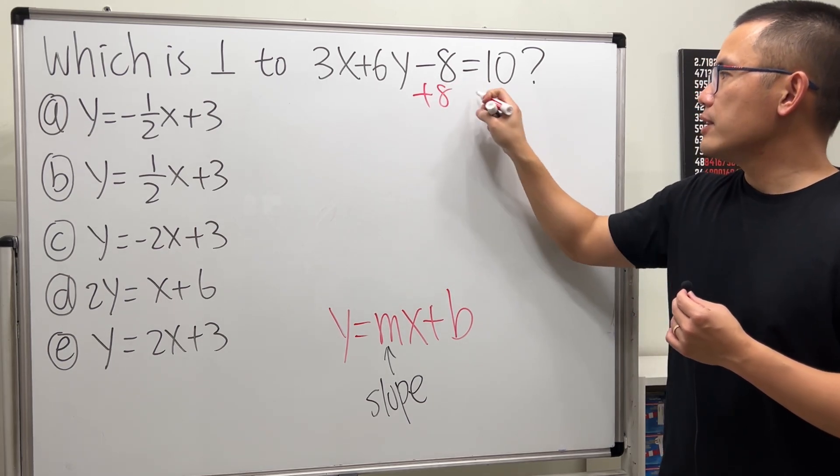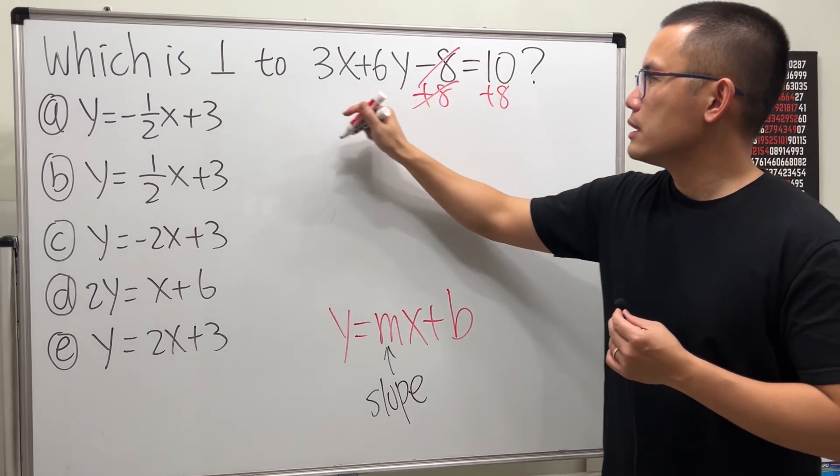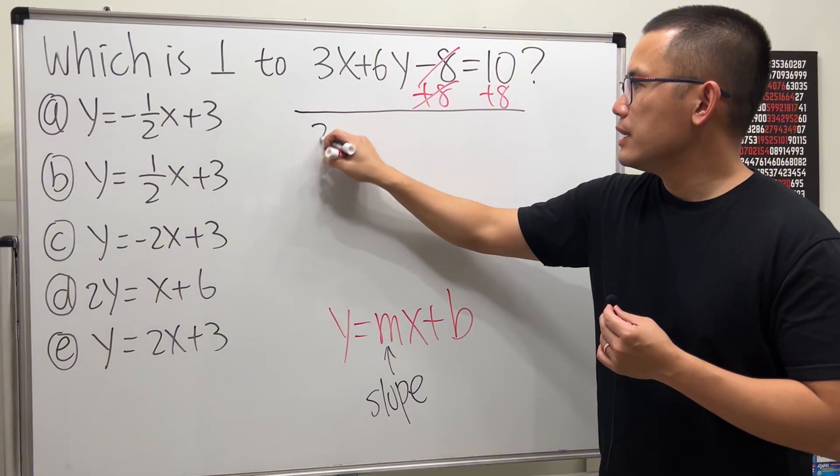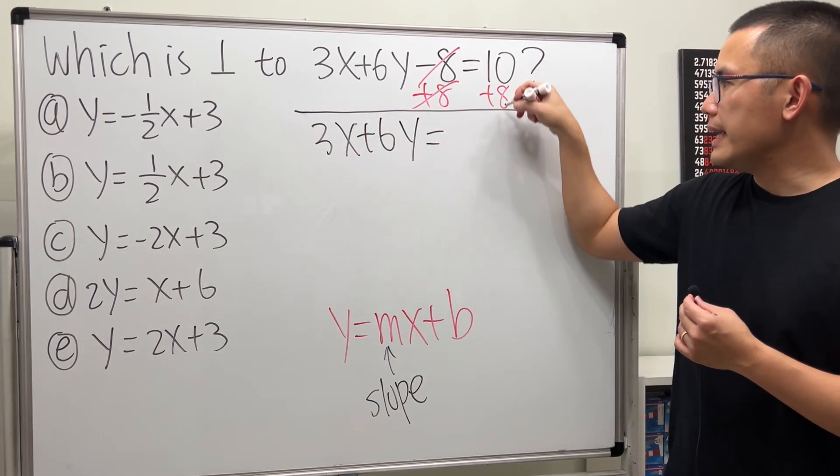First, let's add 8 to both sides, and then we get 3x plus 6y equals 18.